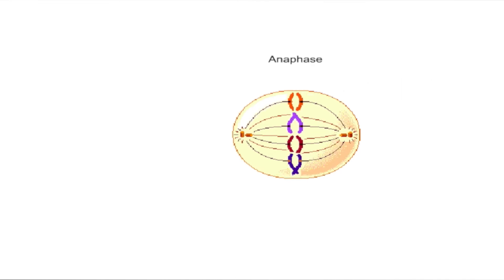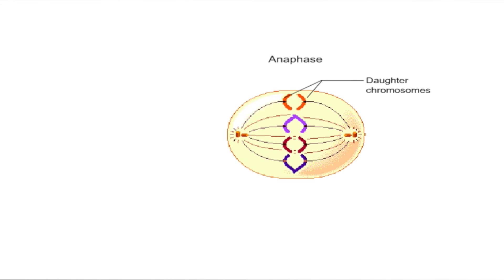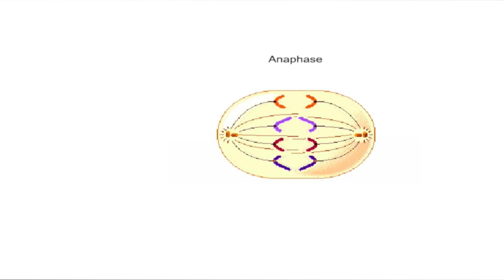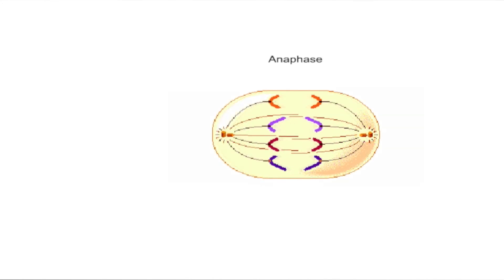Anaphase begins when the two sister chromatids separate at their centromeres, giving rise to two daughter chromosomes. These chromosomes separate and move towards the centrioles at opposite ends. The pulling of the daughter chromosomes occurs as the kinetochore microtubules contract and become shorter.